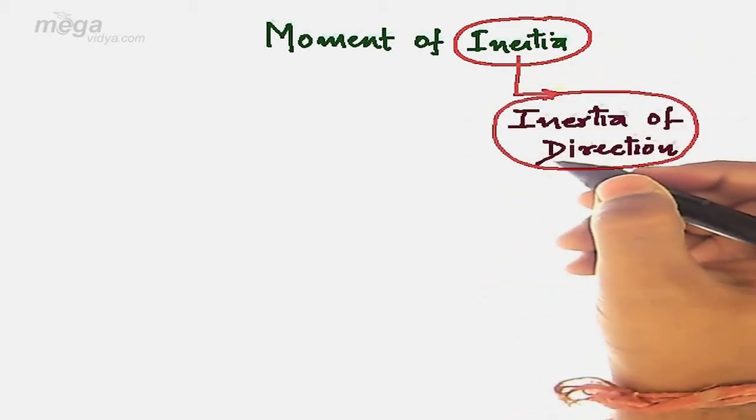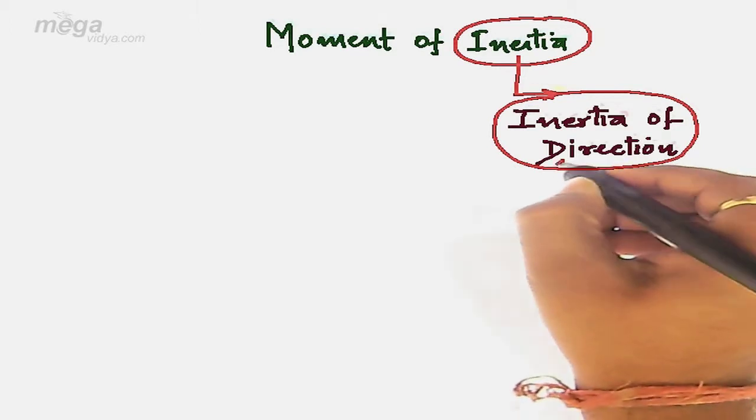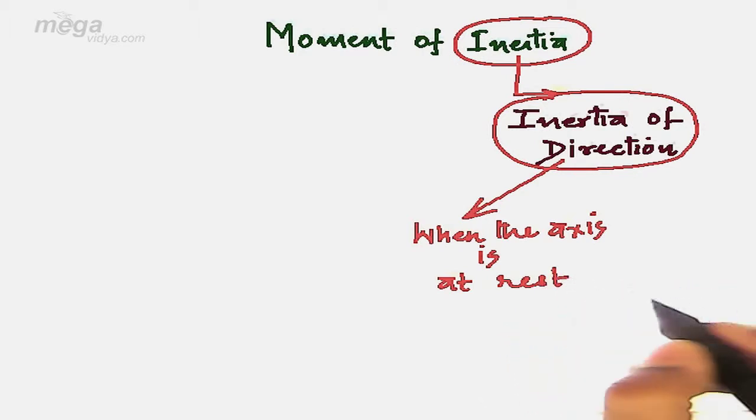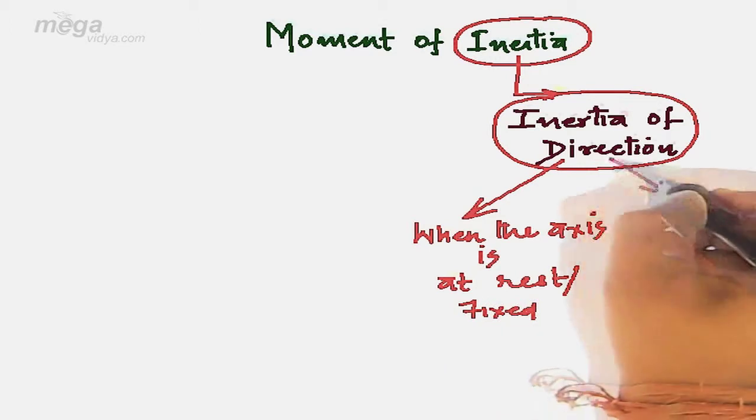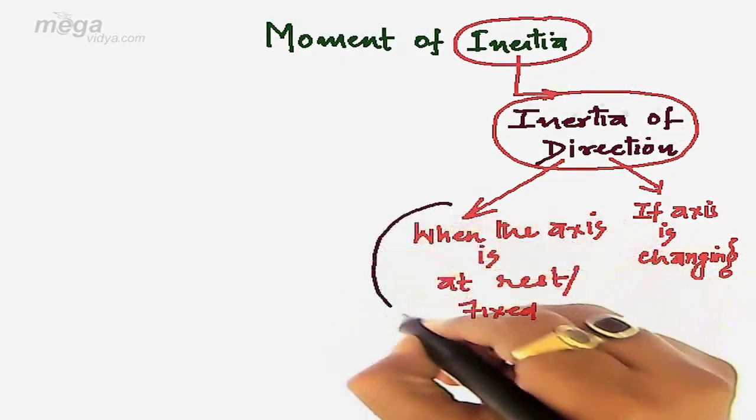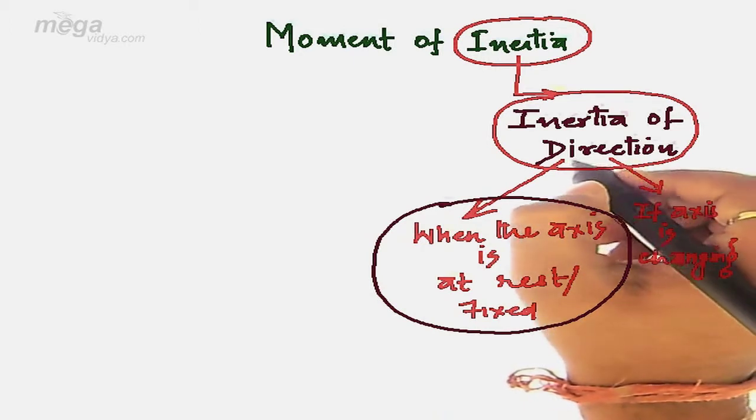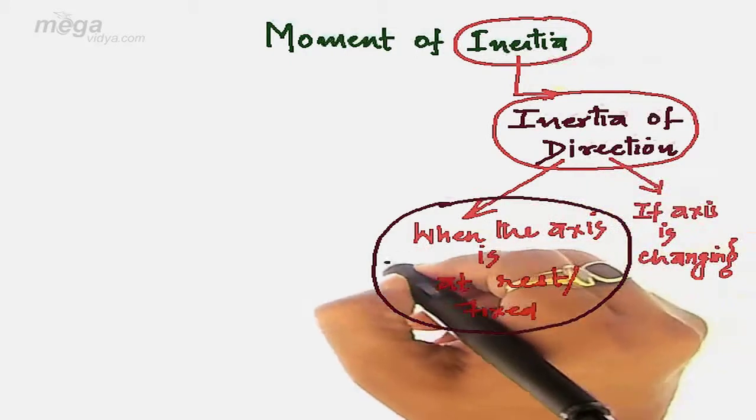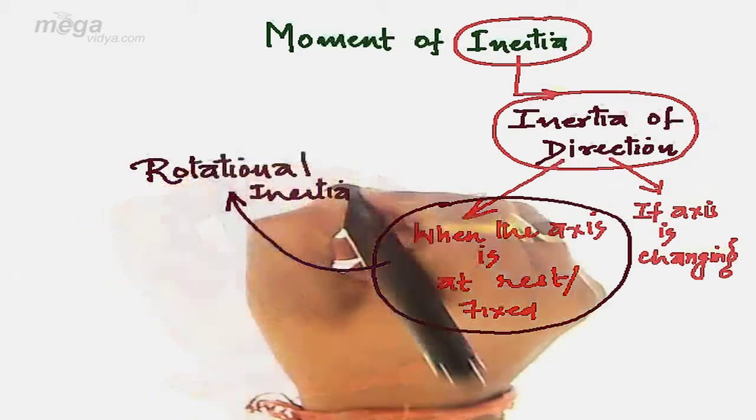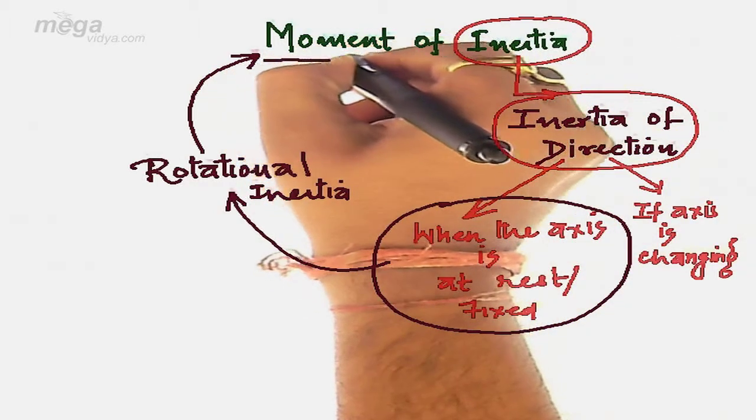According to me, inertia of direction may be explained in two ways. In the first way, when the axis is at rest or you can say the axis is fixed, and second, if axis is changing. So what will happen if the axis is fixed? If the axis is fixed, the body will rotate about a fixed axis and the inertia of direction can be called rotational inertia, which is the same as moment of inertia.